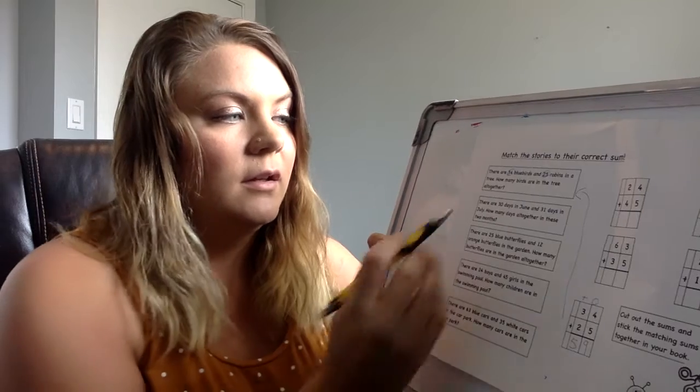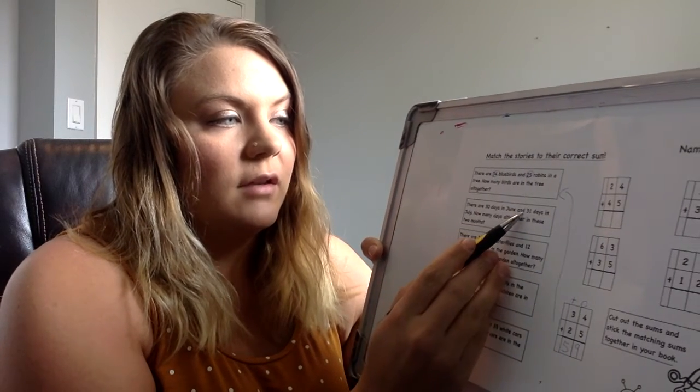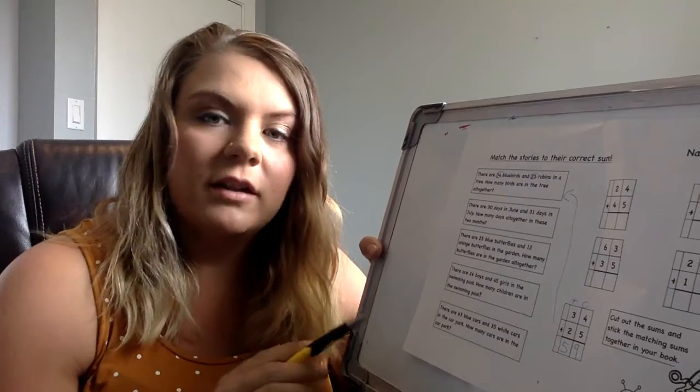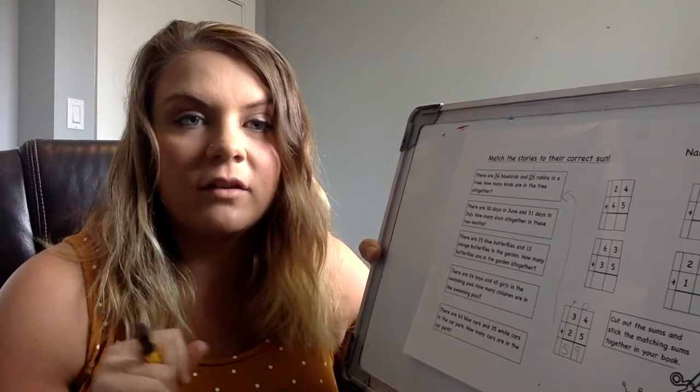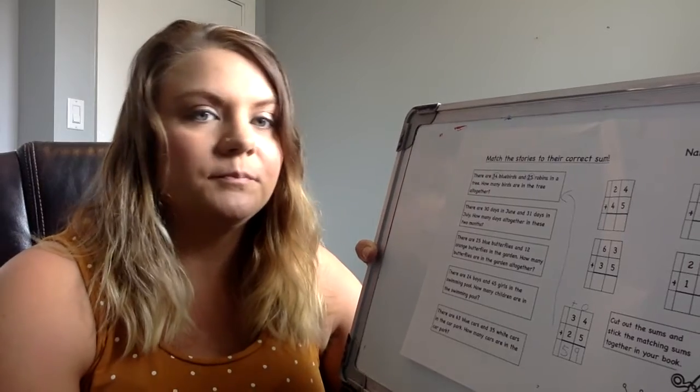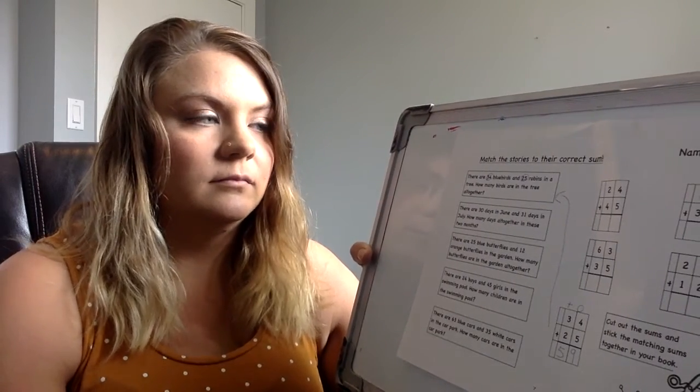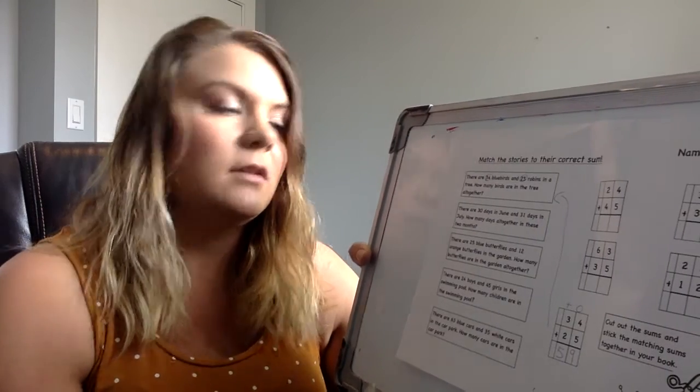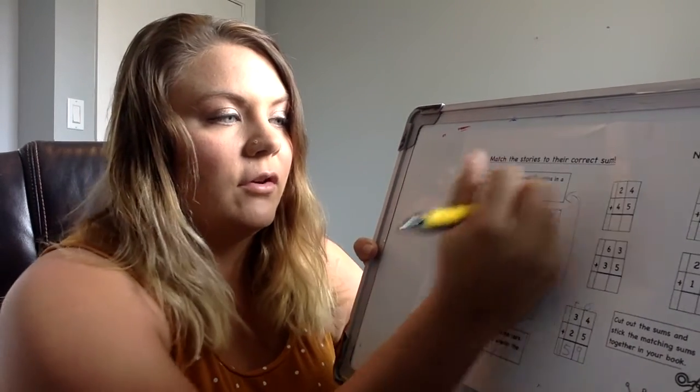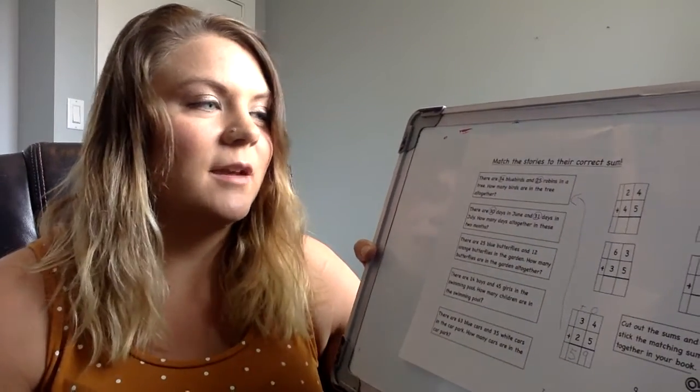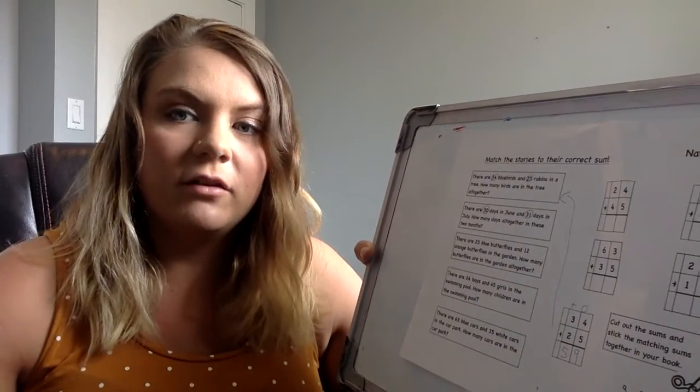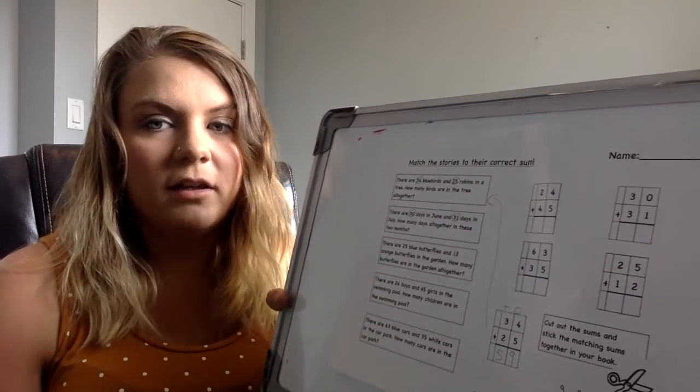All right, let's try the other one. This next one, there are 30 days in June and 31 days in July. How many days altogether in these two months? So I want you to look at that and I want you to circle the two numbers that you are adding together. What numbers would you add together in this equation? So you can highlight them, you can circle them. All right. So there are 30 days in June, so 30 is one of ours, and 31 days in July. July 31st is actually my birthday. So let's find what equation here has the numbers 30 and 31 in it. What one has 30 and 31 in it?